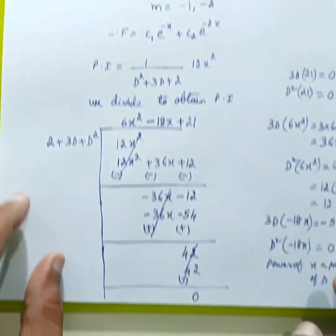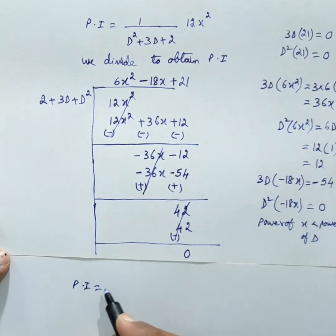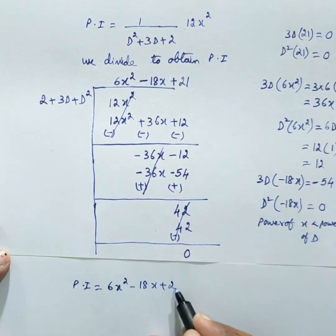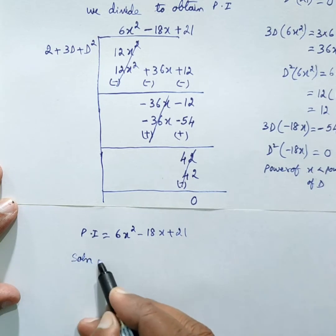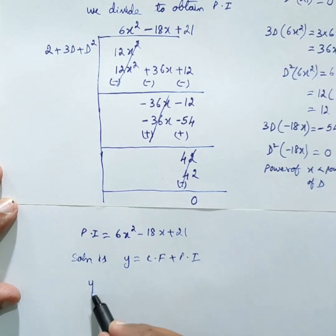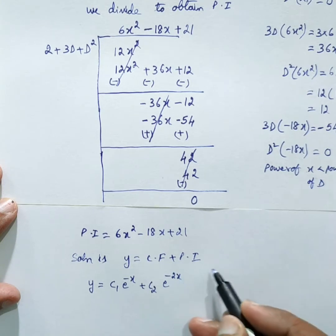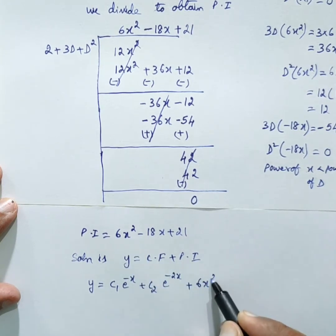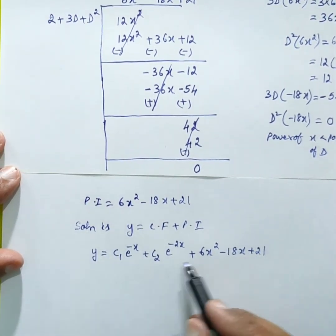We have the particular integral equal to 6x squared minus 18x plus 21. The complete solution is y equals CF plus PI, so y equals c1 e^(−x) plus c2 e^(−2x) plus 6x squared minus 18x plus 21. That is the required solution.